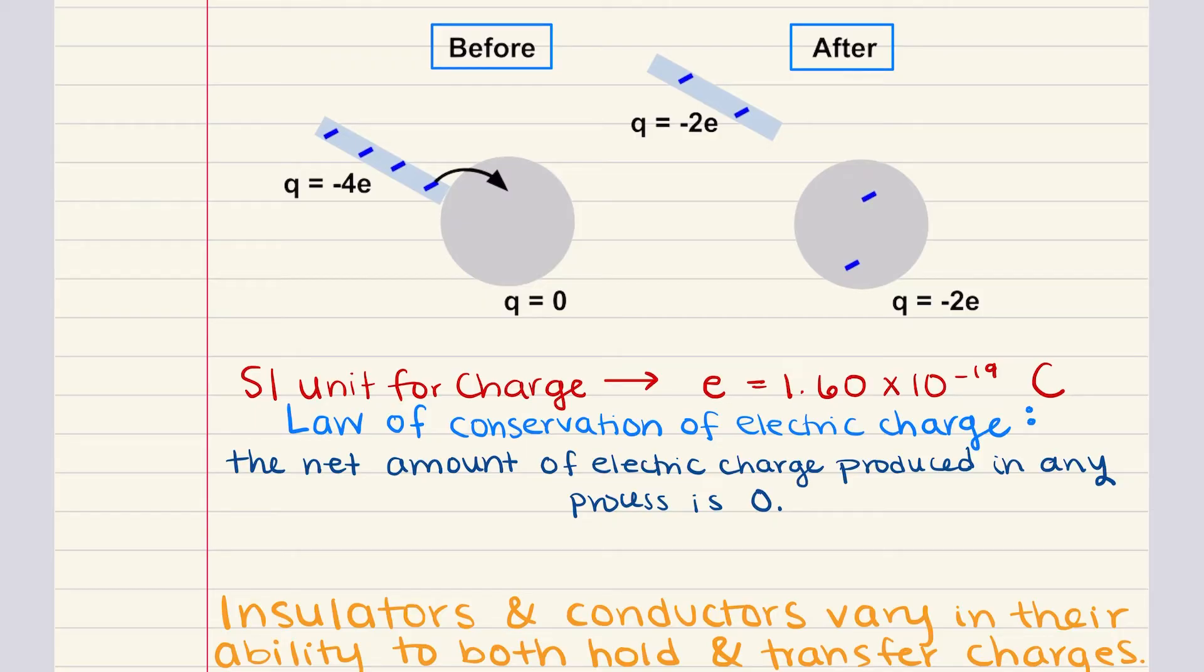This means that charge can neither be created nor destroyed. It can only move from one location to another. So, for instance, consider what happens when we bring a negatively charged object into contact with a neutral one. Electrons may transfer from the charged object to the neutral one, but the total amount of charge both before and after the interaction remains the same. This illustrates that while charges can redistribute themselves, the overall quantity is conserved.